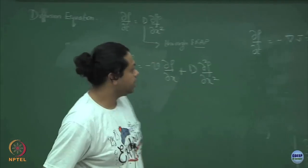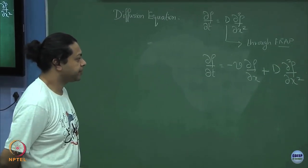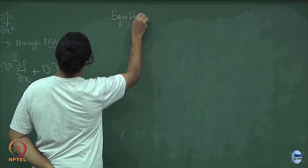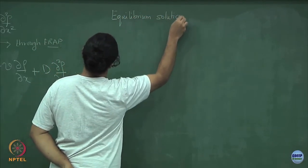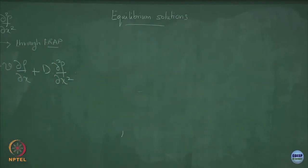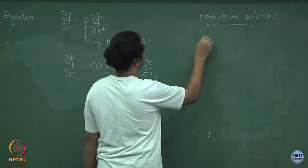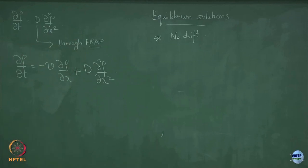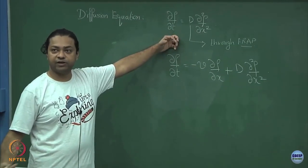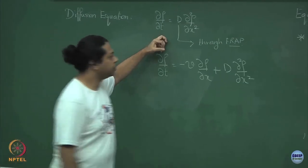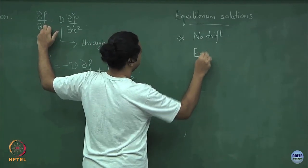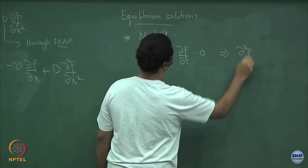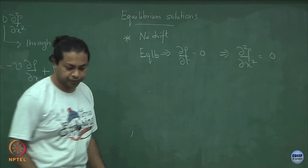Let us look at the solutions of this equation. Let us first look at the equilibrium solutions. If I first take this standard diffusion equation without the drift — no force or no drift. At equilibrium, whatever probability, density, or concentration you have is not going to change with time anymore. Equilibrium or steady state implies that del rho del t is equal to 0, which means what you need to solve is del squared rho del x squared equals 0.